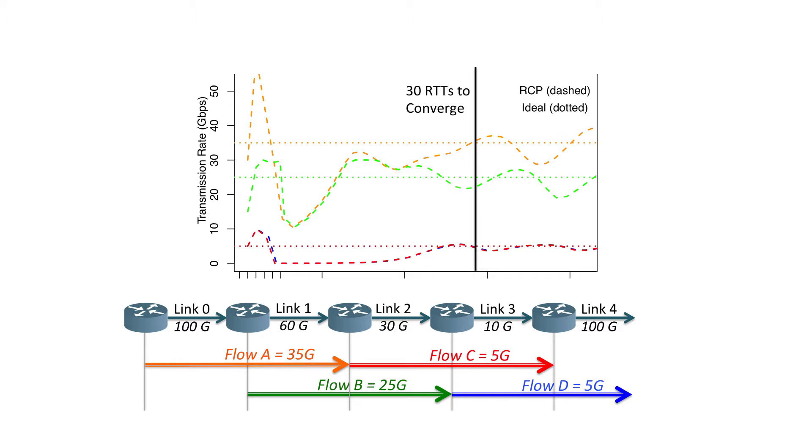This behavior is very typical of all traditional congestion control schemes, be it TCP, XCP, or DCTCP. While it's cool that they don't need any explicit information to figure out these rates, if you step back you start to wonder: why do they take 30 round trip times to figure out just a few rates? Why can't they be like the oracle — maybe one RTT? And as link speeds get faster, this problem will only get worse.